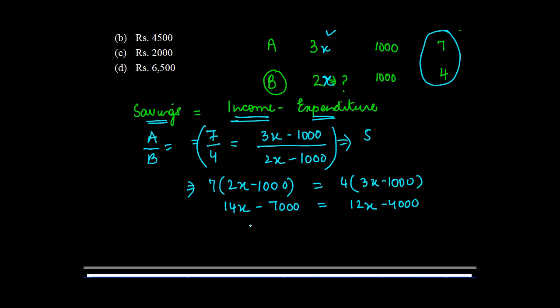4000. So 14x minus 12x equals minus 4000 plus 7000. 3000 equals 2x. Now incidentally, B's income is 2x, so we don't need to do any more work.